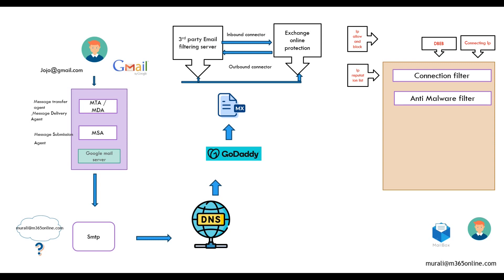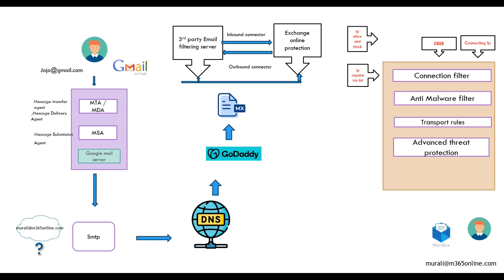Emails quarantined by anti-malware policies can be viewed and released only by the administrator. Assuming there is no malware in the email or its attachment, the email is then scanned against transport rules. If there are no transport rules in Exchange Online blocking this email, it moves to the next filter: Advanced Threat Protection (ATP), which scans attachments and links within incoming emails and includes two security features — Safe Attachments and Safe Links.